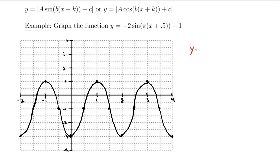Now, the key is we want to know what happens if instead of this graph, I want to graph the absolute value of y. In this case, the absolute value of negative 2 sine of pi x plus 0.5 minus 1. And my rules are going to be exactly the same as any other function.